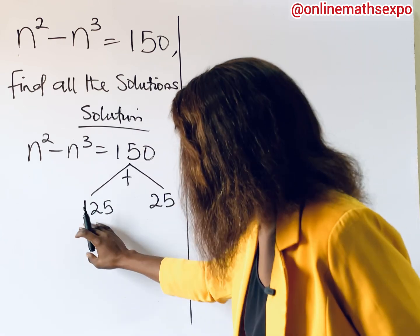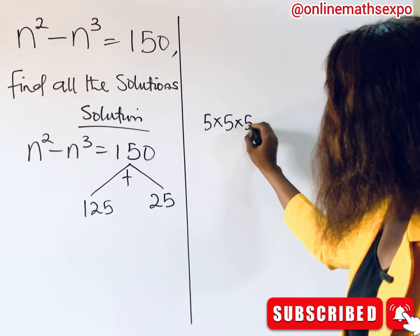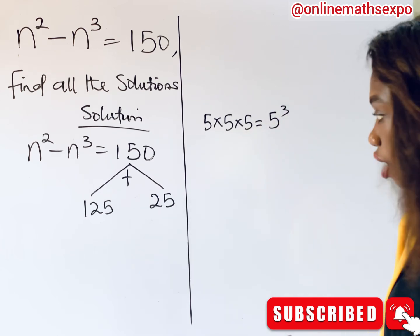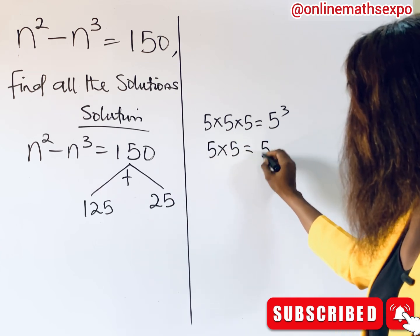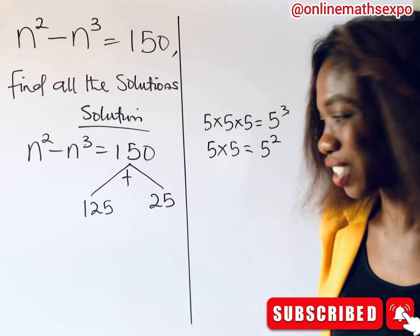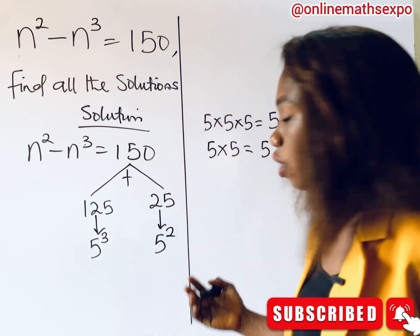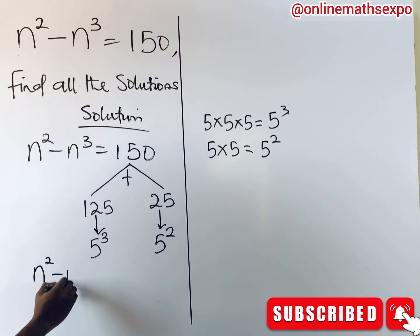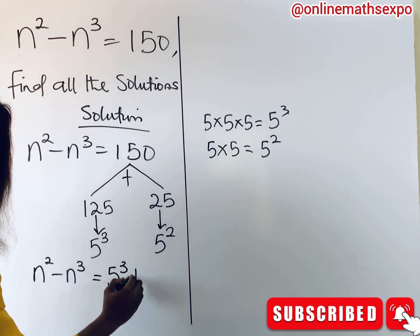Let's check: 125 can be expressed in cube form as 5 times 5 times 5, which gives 125, the same as 5 raised to the power of 3. What about 25? You have 5 times 5, giving 25, the same as 5 squared. So we have the cube for 125 and the square for 25. This means we replace 150 with 5 cubed plus 5 squared.